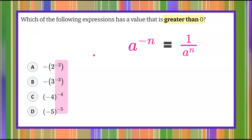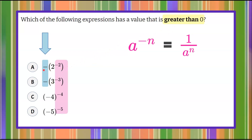When I look at this, I can see that because the first two answer choices, A and B, have a negative outside the parentheses, it does not matter what happens to this power — it's going to be negative. A negative value is less than 0, so therefore I can eliminate answer choices A and B because these are going to be equivalent to a negative value.